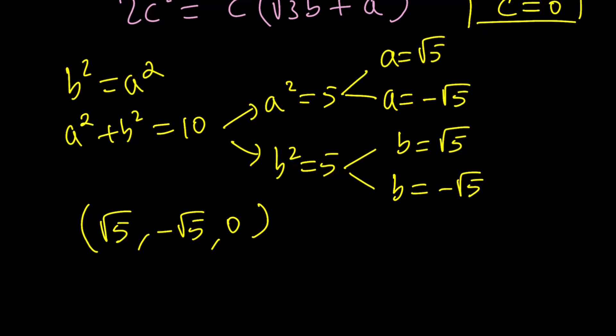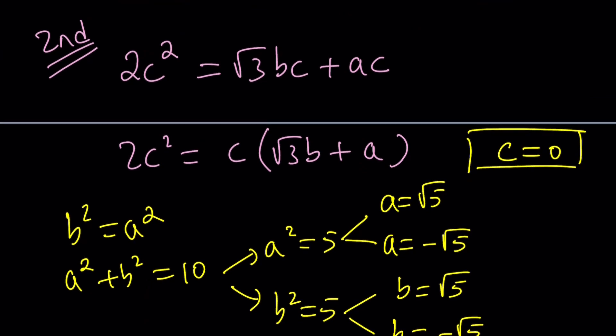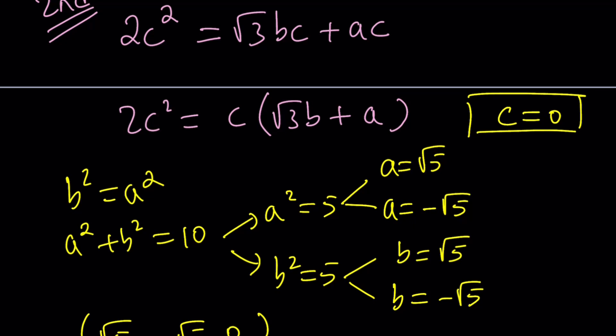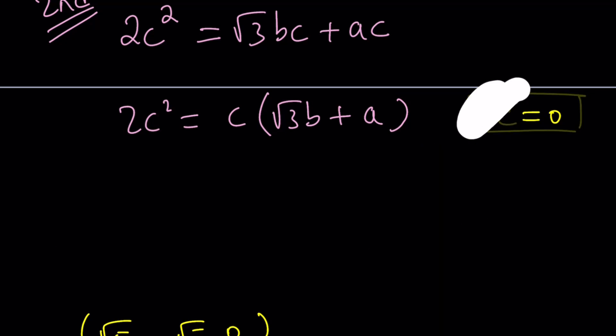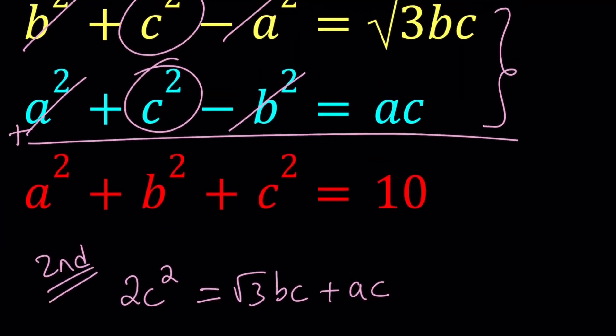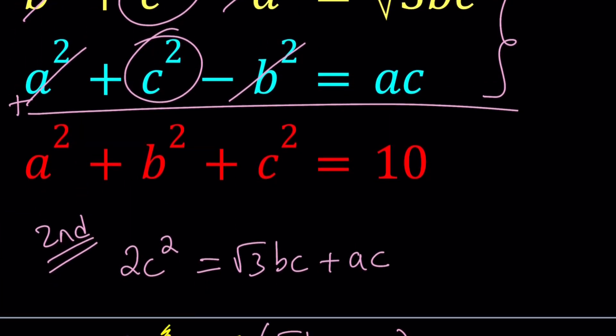But notice c = 0 is not the only result. After coming up with c = 0, now let's look at the alternative. Now suppose c does not equal 0. Divide both sides by c and now you're going to get 2c = √3b + a. This gives us a relationship between a, b, c which is nice because we could use it in our equations.